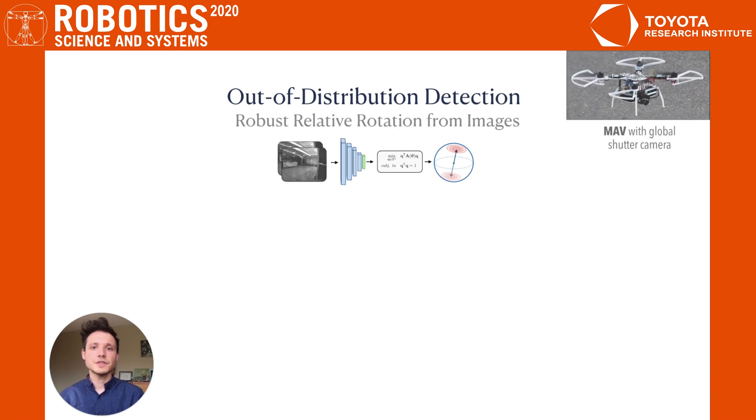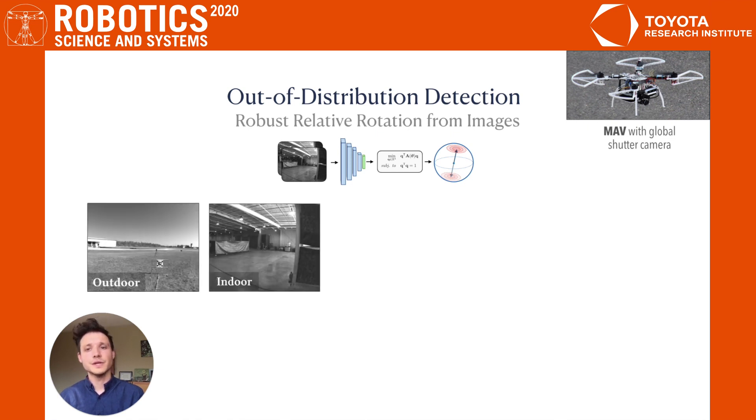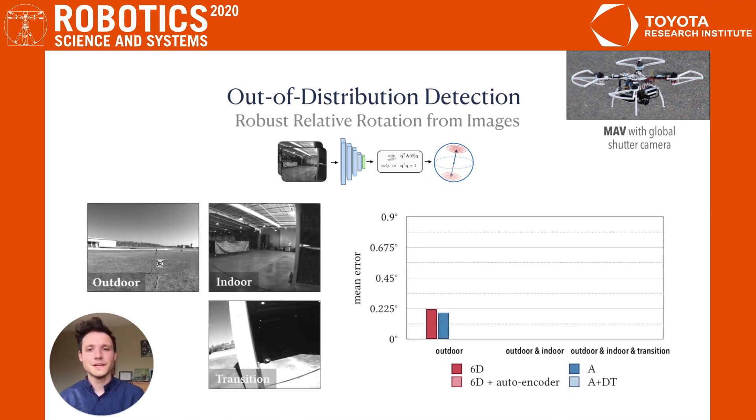In addition to the KITTI dataset, we further evaluated our OOD detection scheme using data collected with a micro aerial vehicle flying between indoor and outdoor environments. We trained each model with outdoor data alone and found that our approach was able to compete with a separate autoencoder mechanism when exposed to indoor and transitional images at test time.